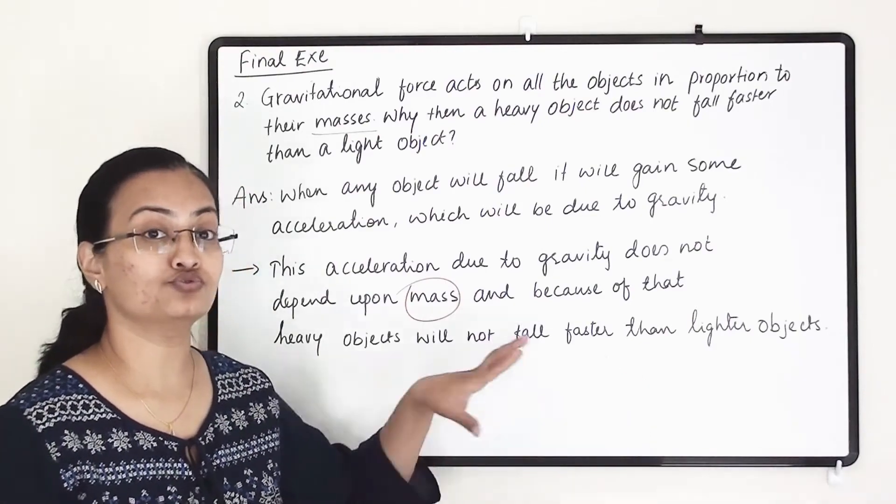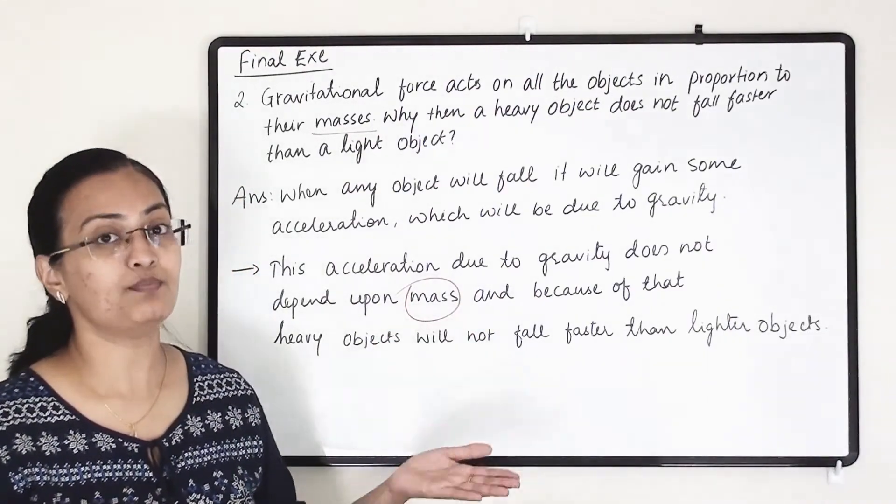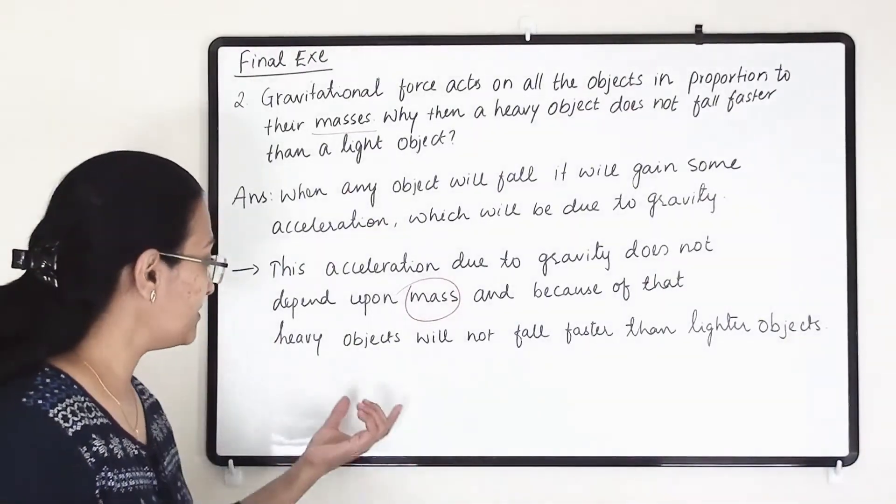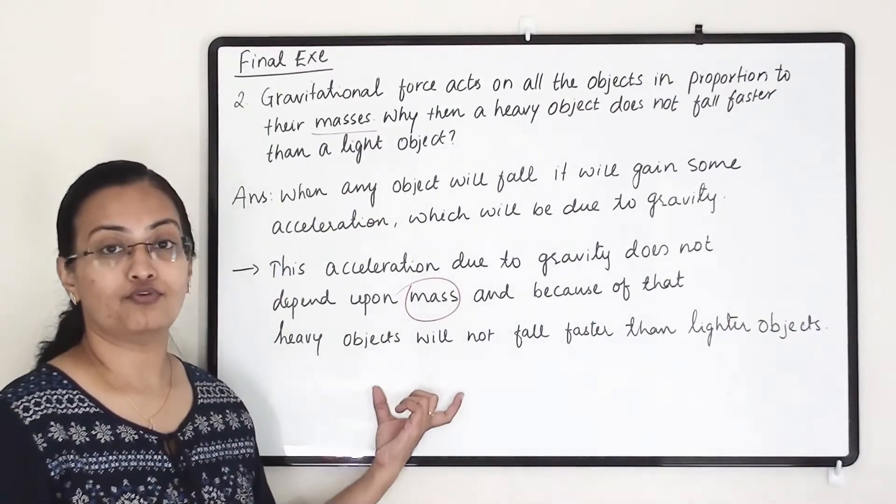Both of these objects will fall due to the acceleration, and acceleration is independent of the masses of the objects. So that's why heavy objects will not fall faster.